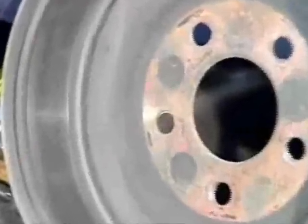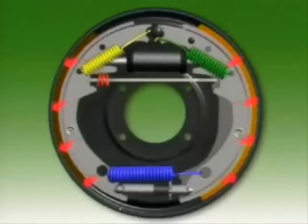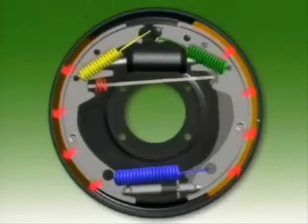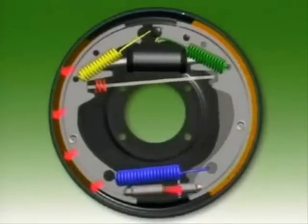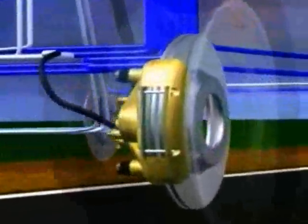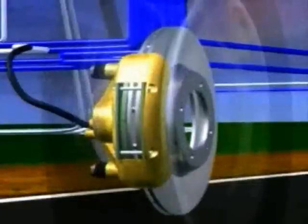Drum brakes have a drum attached to the wheel hub, and braking occurs by means of brake shoes expanding against the inside of the drum. With disc brakes, a disc attached to the wheel hub is clamped between two brake pads.